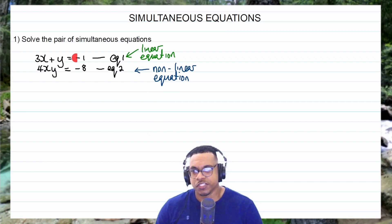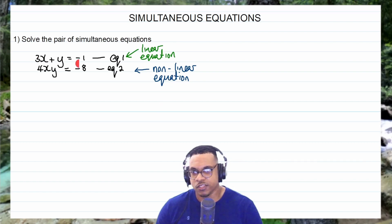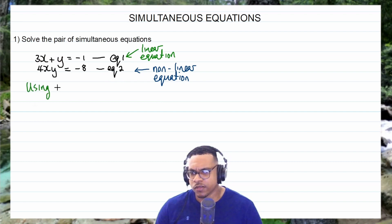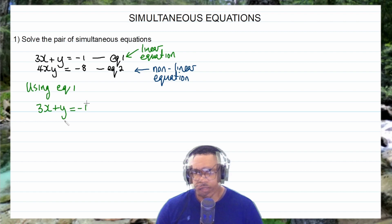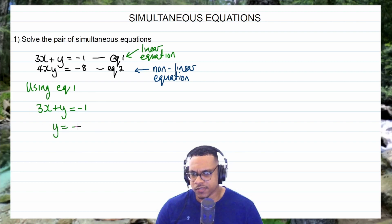Since we have one linear and one non-linear equation, we'll use the method of substitution. When using substitution with a linear and a non-linear equation, you use the linear equation to transpose for either x or y. Using equation 1 — 3x plus y equals negative 1 — since y is by itself (1y), it's easier to transpose for y. Taking the positive 3x across the equal sign changes its sign, giving y equals negative 1 minus 3x. This is equation 3.